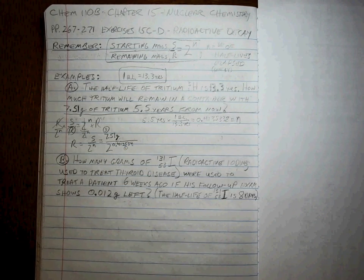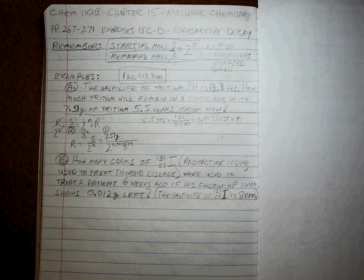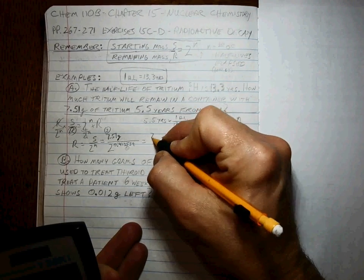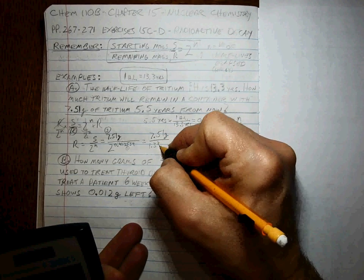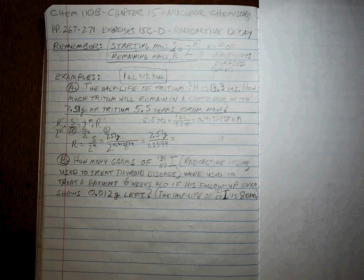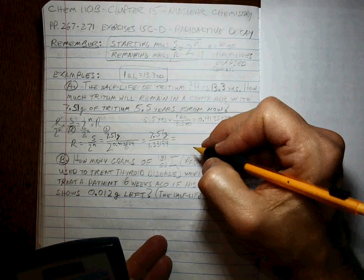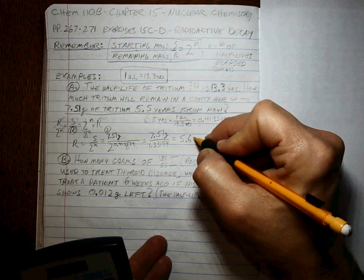You have to know how to punch this in your calculator: 2 Y to the X, or 2 carat 0.413534 is equal to 1.33194. So 5.64 grams.